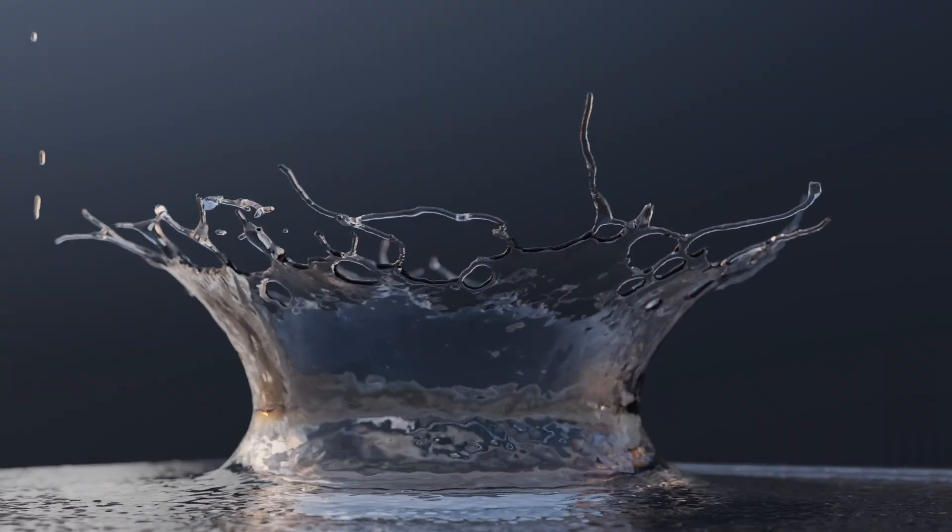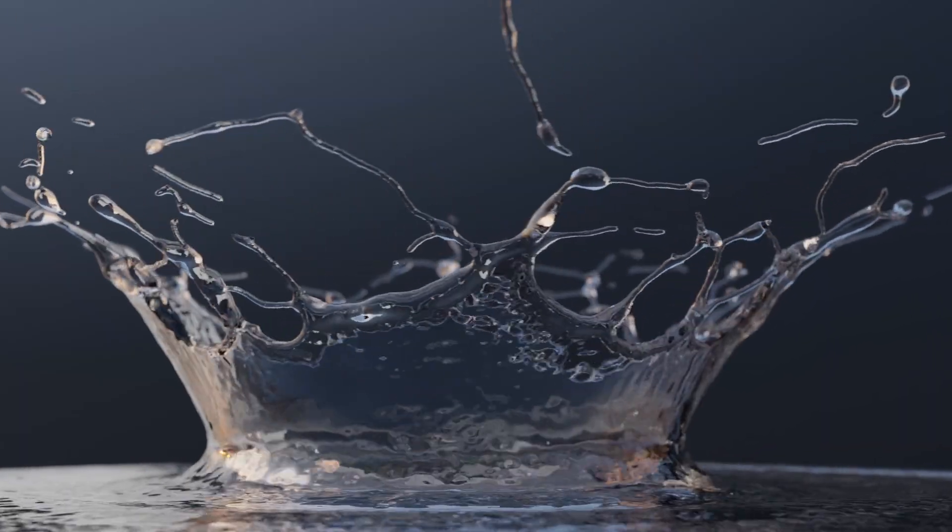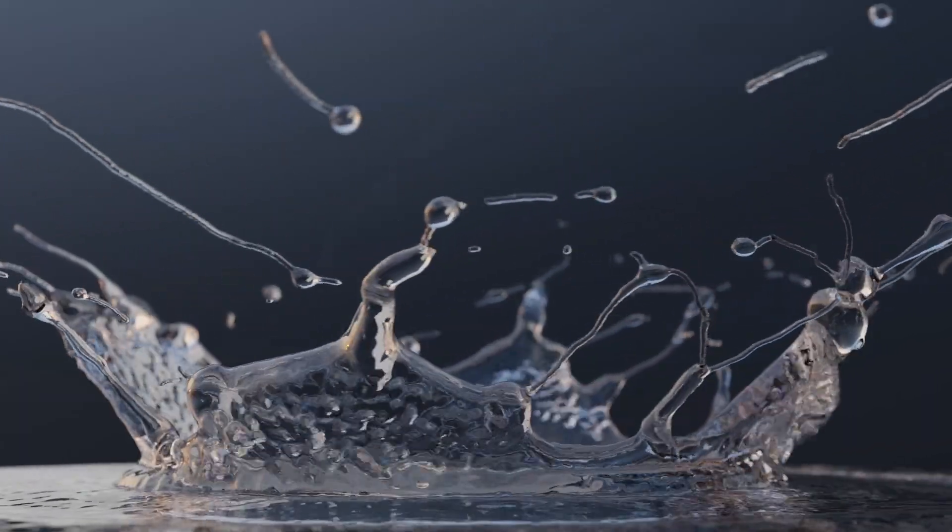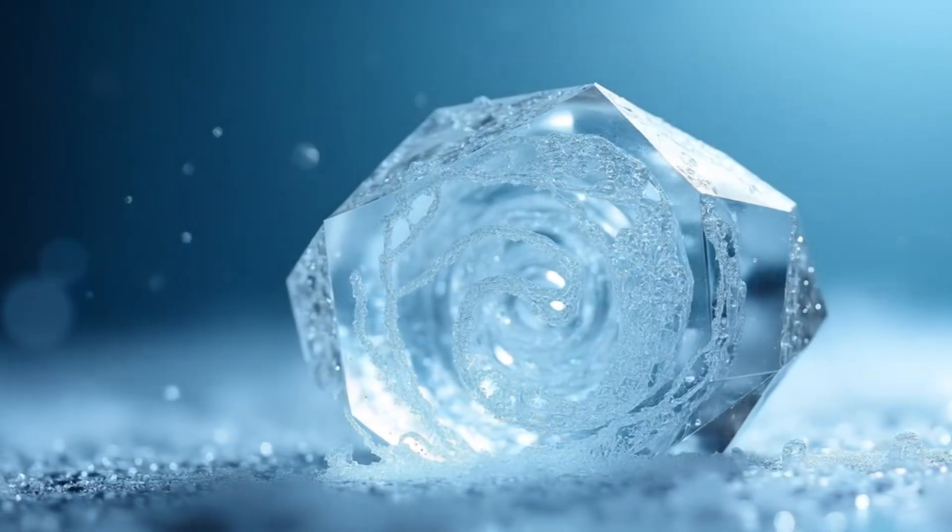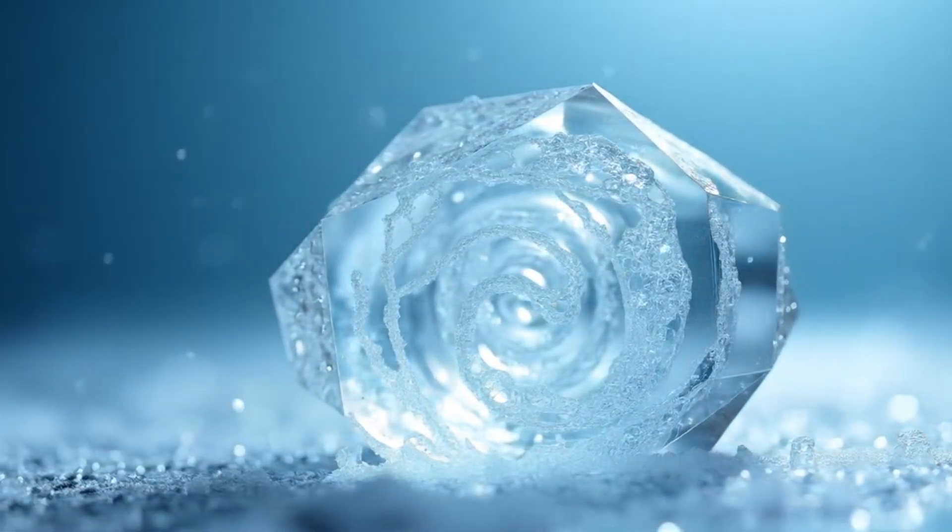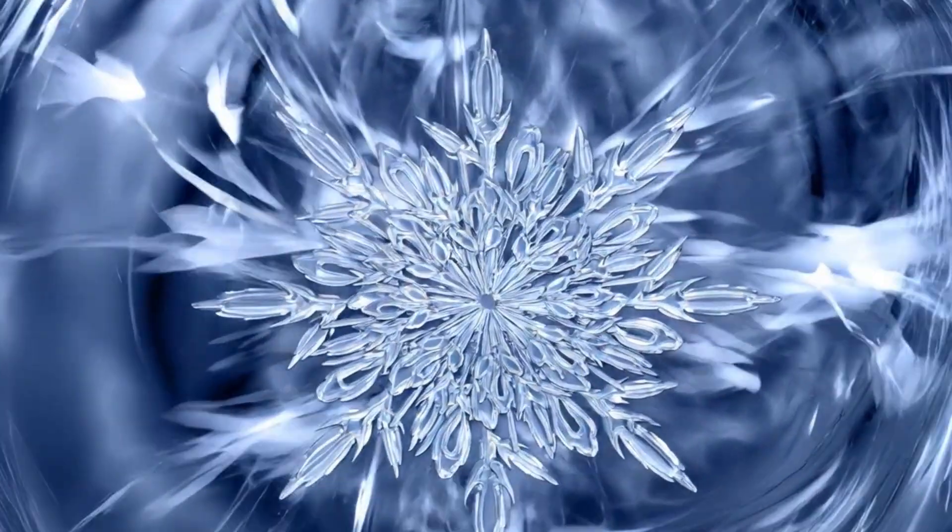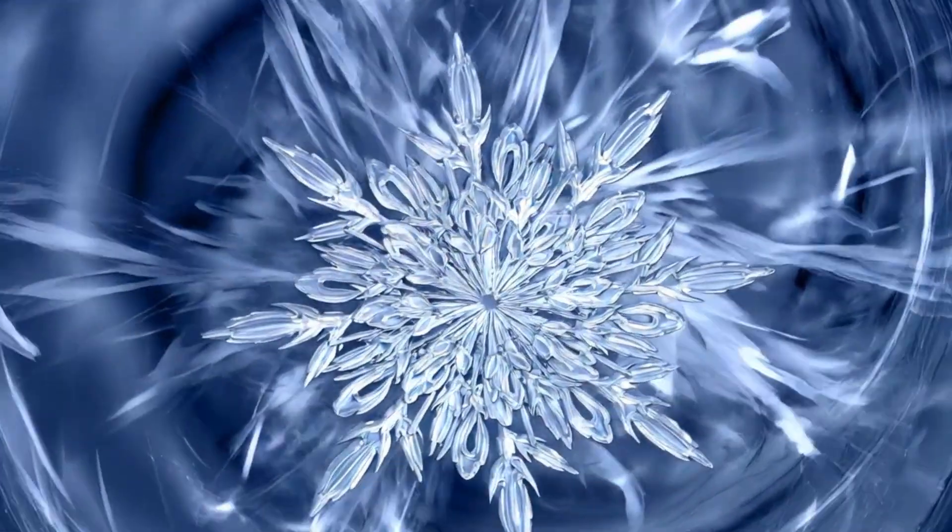In physics, we say that the liquid is symmetric. It looks the same everywhere. The crystal breaks that symmetry. Suddenly, the world has directions that matter: up, down, diagonal, because of the repeating atomic structure.